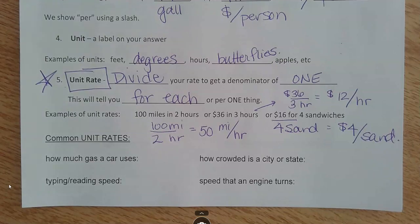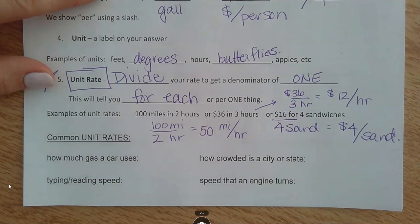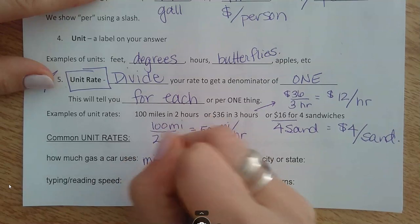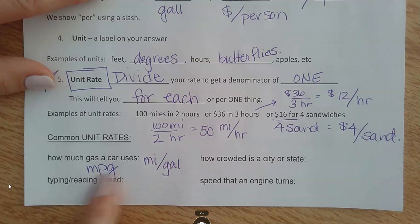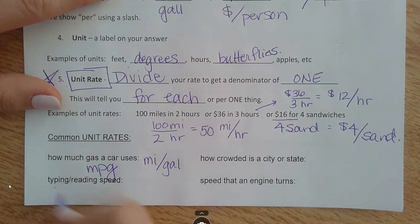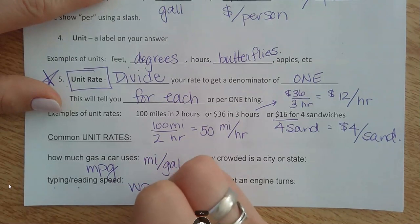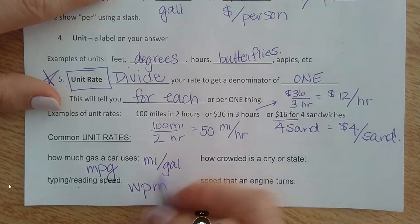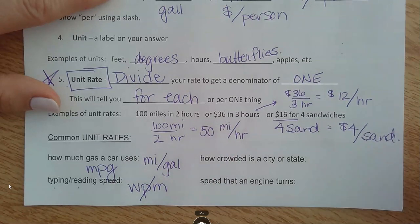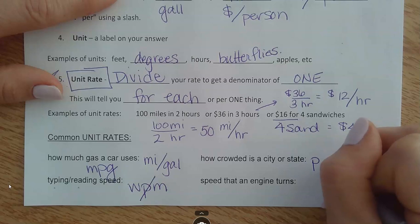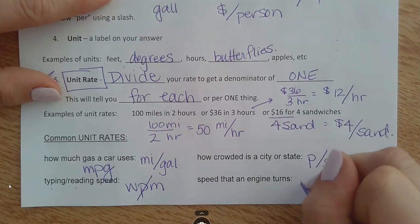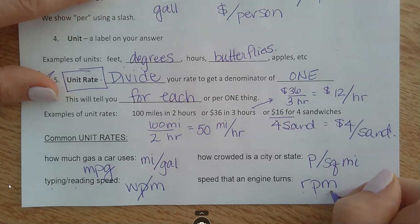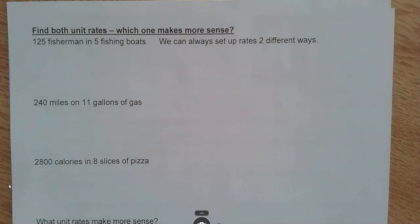Some common unit rates you've probably heard of: how many miles your car can go on one gallon of gas — we call that MPG. If you listen to car commercials, you'll hear them say how many MPG. If you're typing or reading, we talk about words per minute — you can abbreviate it with a slash. How crowded a city or state is — population density — is measured in people per square mile. The speed an engine turns is RPM: rotations per minute, how fast your engine is spinning. Unit rates are something useful you'll see quite often.